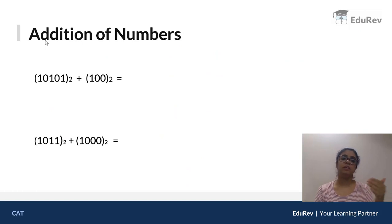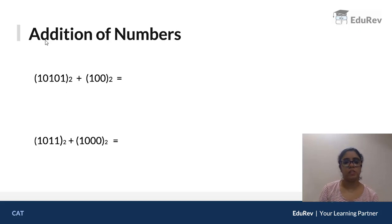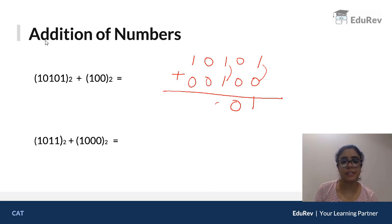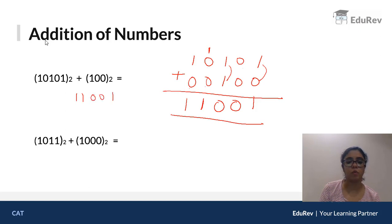Now let's look at addition of binary numbers. In decimal addition, carry goes to the next column. In binary, we only have 0s and 1s. Adding 10101 and 100: 1+0=1, 0+0=0, 1+1 gives 0 with carry 1, then 1+0+carry 1, then 1+0=1. So the answer is 11001 to base 2.